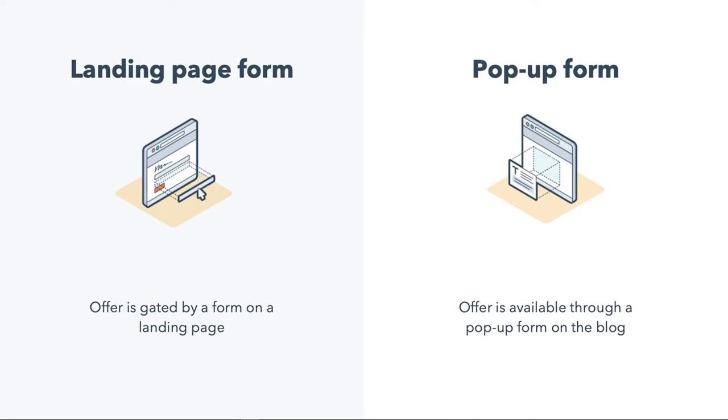Let's compare different methods for converting traffic. To do this, you optimize your blog post with two different methods. One way is by adding calls to action to download a related content offer that is gated by a form on a landing page. The other way is by adding a popup form directly onto the blog post so that traffic can convert on the offer without ever leaving the blog post.